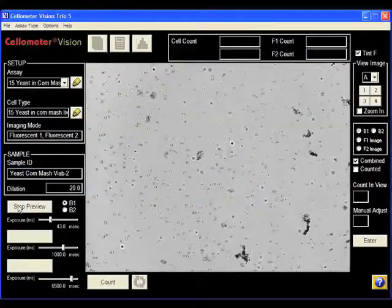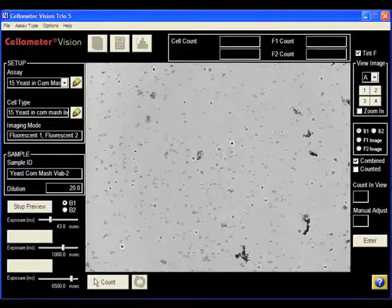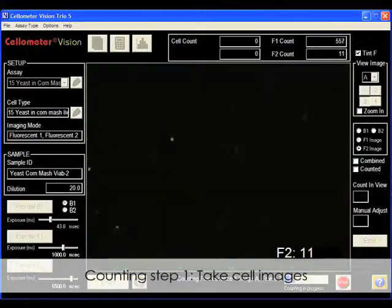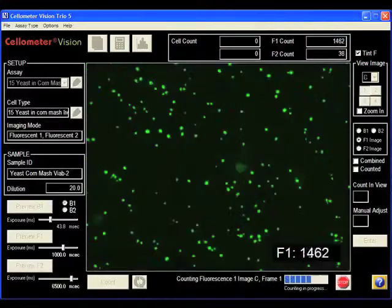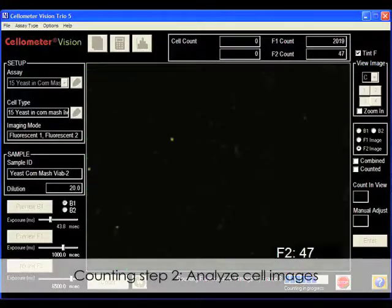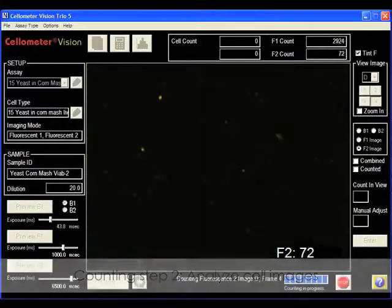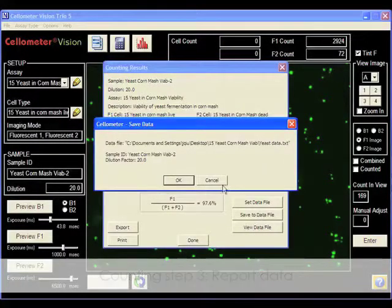When the chamber is inside Cellometer Vision, a bright field image of the corn mash sample is shown. Click count to automatically start cell counting. Cellometer Vision takes cell images in bright field and in fluorescence. Cell images are automatically analyzed based on preset parameters. Live and dead cell concentrations and viability are automatically reported.